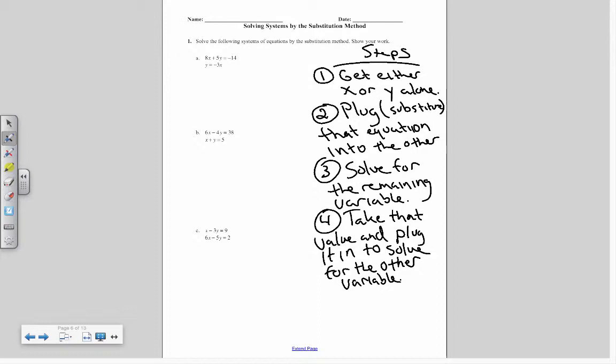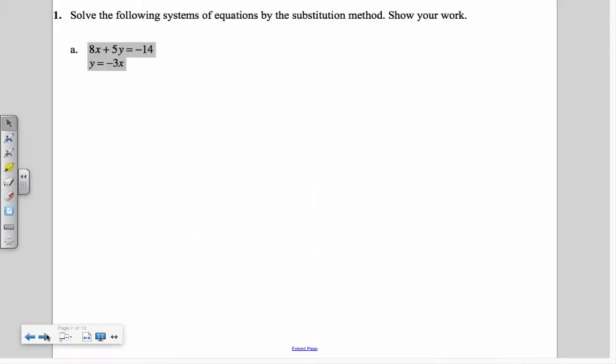So I'm going to walk you through these three examples and then I have an example of how this can be done given a situation. So for example number one, you'll notice that I have two equations, one, two, and I have a y equals negative 3x. So that step number one where it's get a variable alone or solve for a variable, I already have a y equals. So what I'm going to do is take this negative 3x and because it's equal to y, I'm going to plug it in in the first equation for that y.